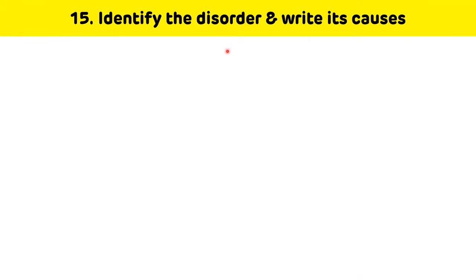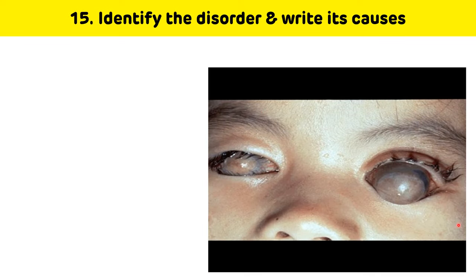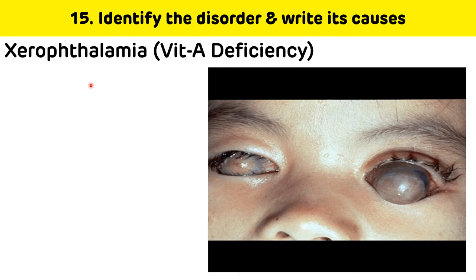Next question: identify the disorder and write its causes. This condition is associated with vitamin A deficiency and is xerophthalmia — the conjunctiva is dry, scarred, and wrinkled. It occurs due to the deficiency of vitamin A, which is a fat-soluble vitamin.